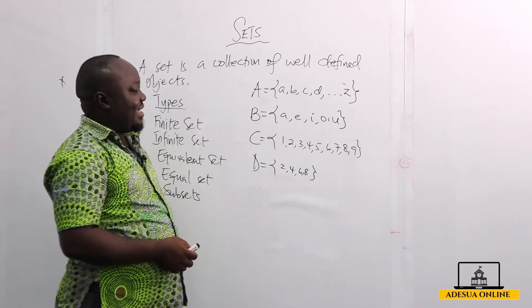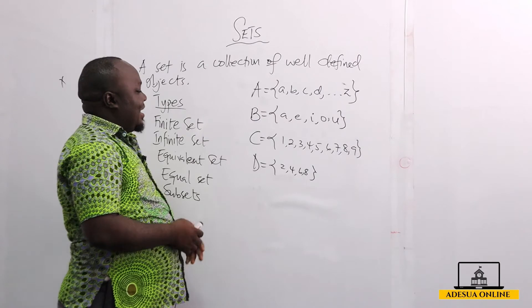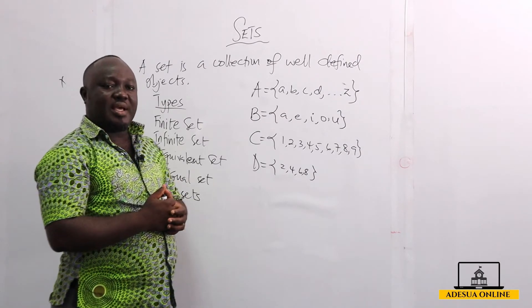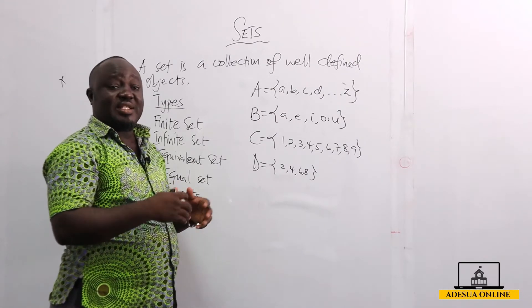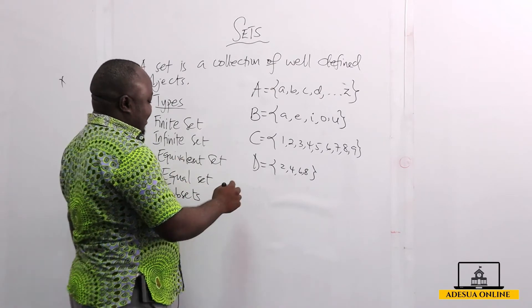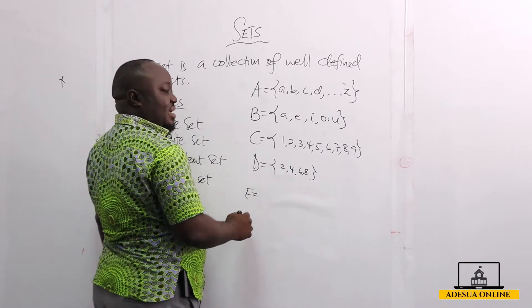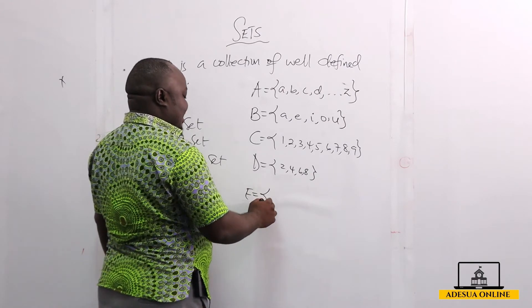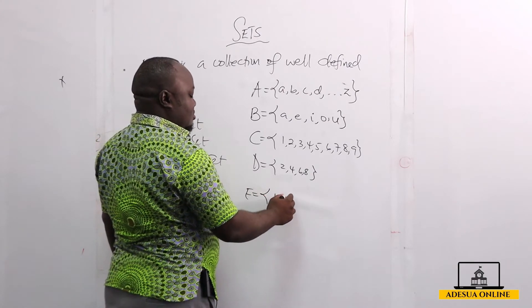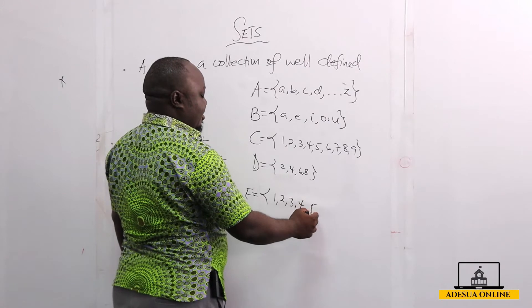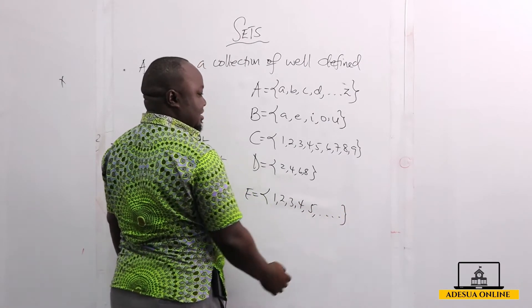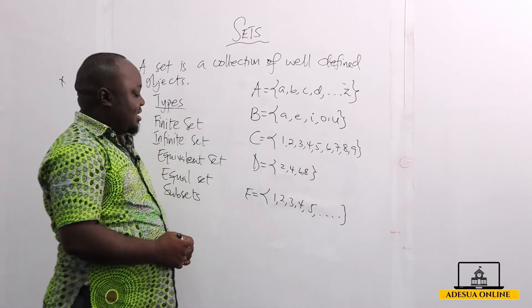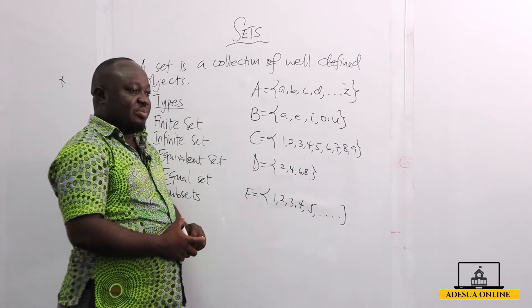Now when we talk about infinite sets, it is either its first member cannot be found, or its last member cannot be found, or both. So if I have a set E of natural numbers in the world, I can start with 1, 2, 3, 4, 5, and it goes on towards infinity. So this is an infinite set because its last member cannot be found.